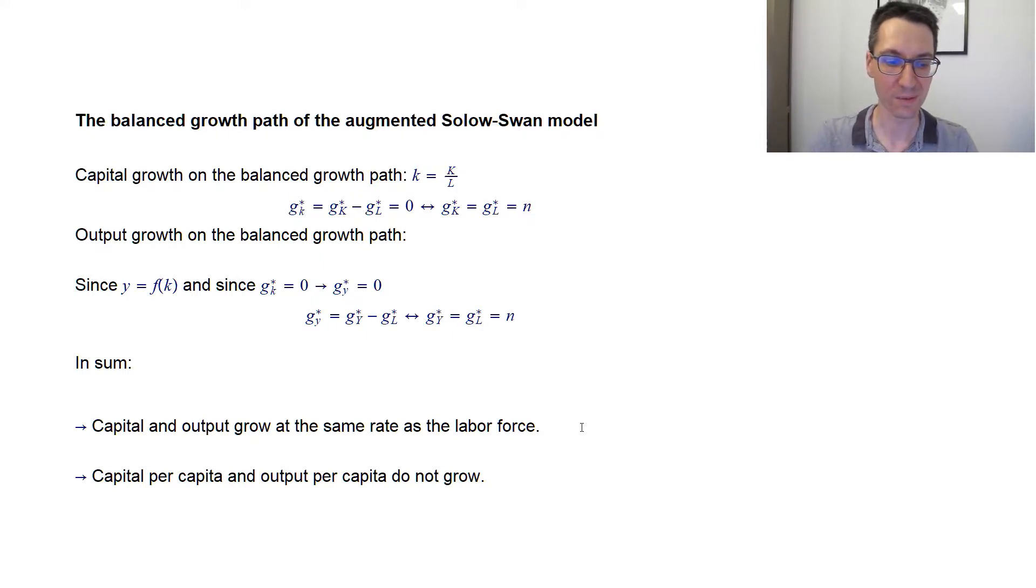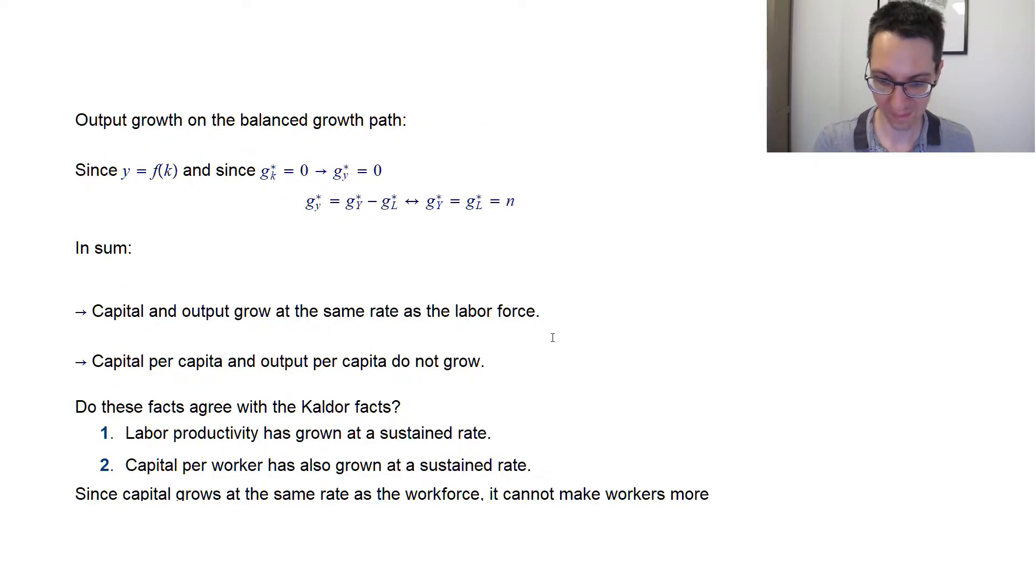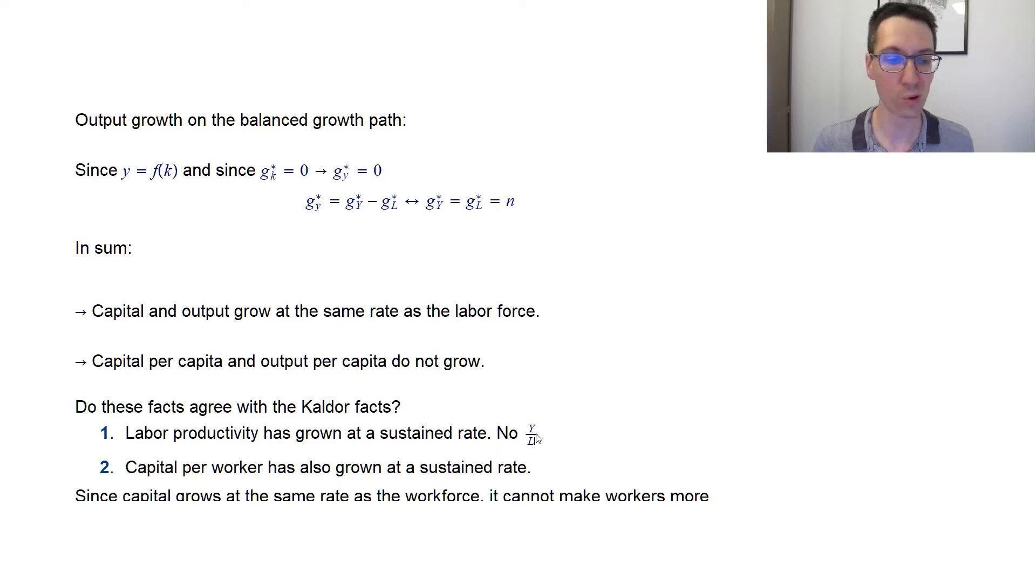All right. So these facts were. First fact was labor productivity has grown at a sustained rate. Here, is that the case? No. Why? Well, we have just seen that. Labor productivity in that context is Y divided by L. Because here, the population is the working population equals y. And we have seen that it is stable. So no, labor productivity does not grow in this model. So it doesn't agree with the first Kaldor fact.